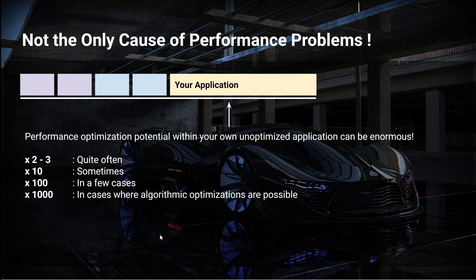Compound performance penalties are not the only cause of performance problems in the typical application. Quite often it is possible to get a 2 to 3x performance improvement if you just know what to look for, in some cases even 10x, and in fewer cases maybe even 100x, and in much rarer cases even 1000x — but those are usually cases where some kind of algorithmic optimization is possible. If you check out the description below this video, I have a link to a video that explains the 9 plus 1 core optimization principles that I use when performance optimizing applications myself.